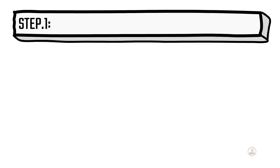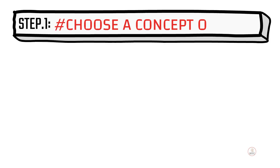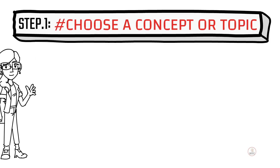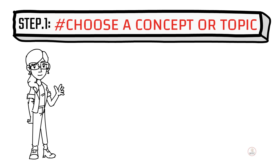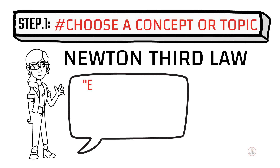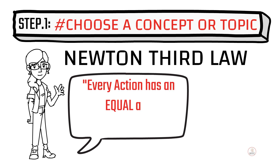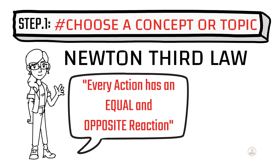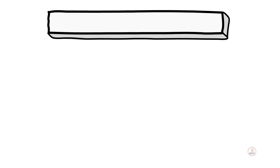So, let's begin. Step 1: Choose a concept or topic you want to learn about. If you have any topic that is difficult or important, select it. For example, you can take Newton's Third Law — every action has an equal and opposite reaction.